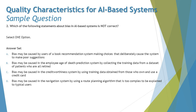Option C says: bias may be caused in a credit worthiness system by using training data obtained from those who own and use a credit card. If you're building a system for people who are aspirants for a credit card and have never used one, collecting data from existing credit card users creates a bias. That's a difference and deviation, so option C is also absolutely true about bias.